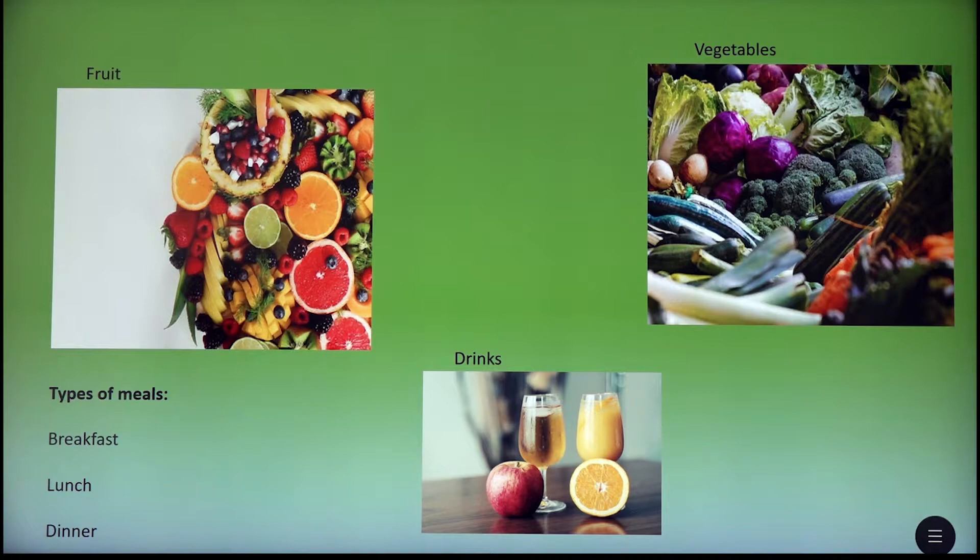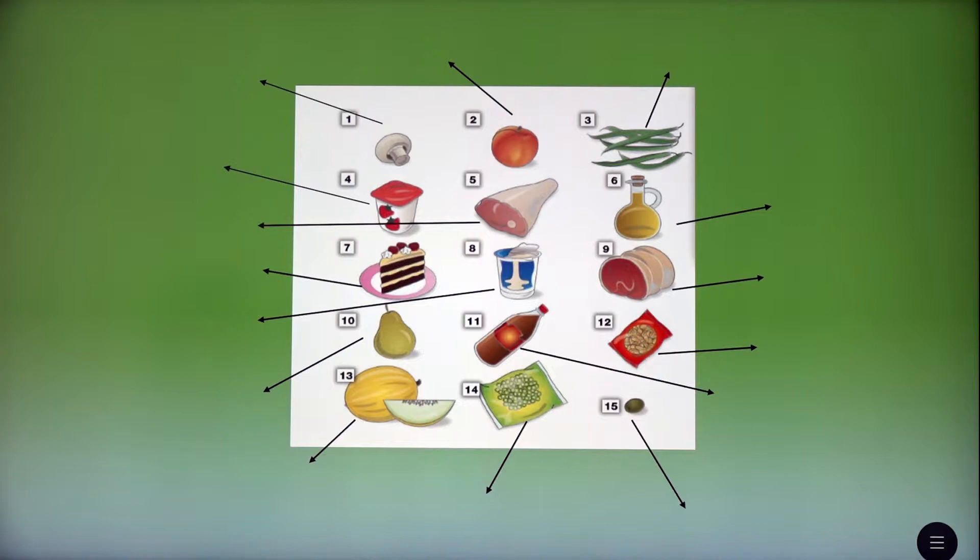Let's start with type of meals. We have three types of meal. It's breakfast, lunch and dinner. You also can see another picture on your screen. It includes some food, foods and drinks, starting from the first one. Let's name each one, one by one.